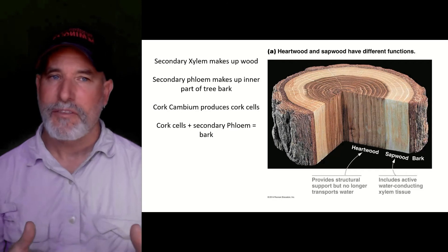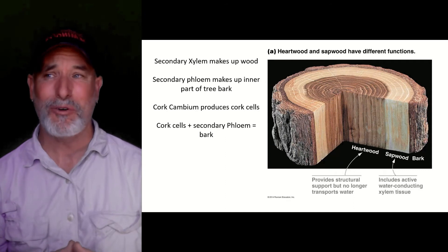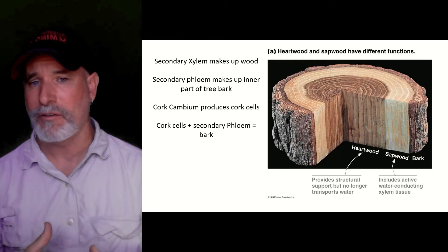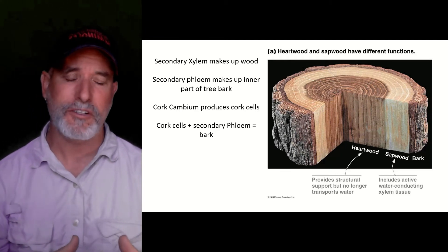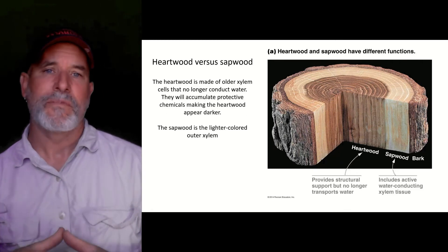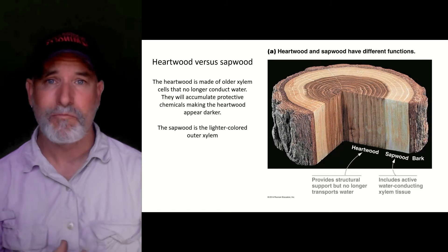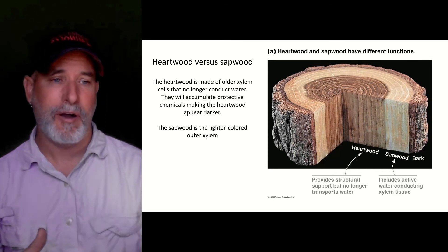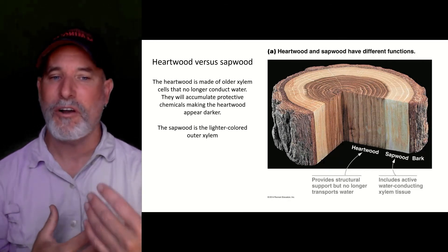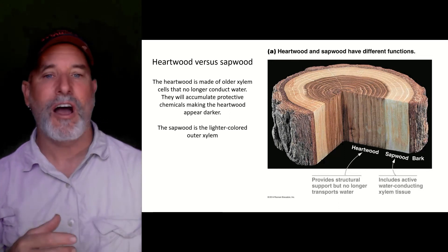Secondary xylem is what makes up wood — I use a two-by-four as an example. Secondary phloem makes up the inner part of the bark, and the cork cambium produces cork cells. Cork cells plus secondary phloem equals bark. You may notice the center of a piece of wood is darker — that's called heartwood. In a pine tree, heartwood smells pretty good because it's full of protective chemicals. Those cells are dead at maturity and are no longer conducting water.